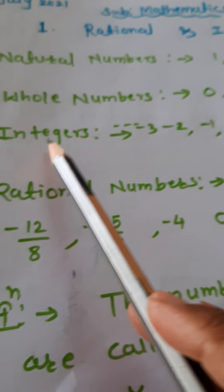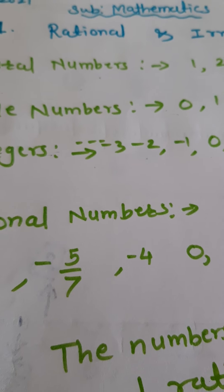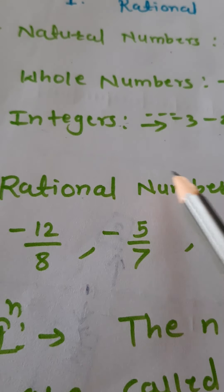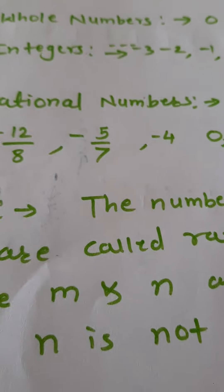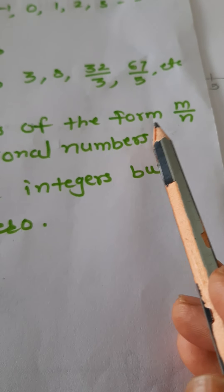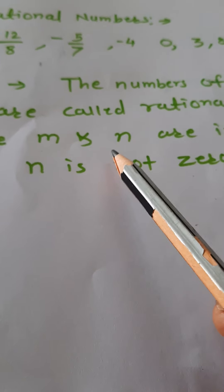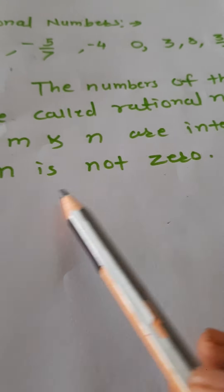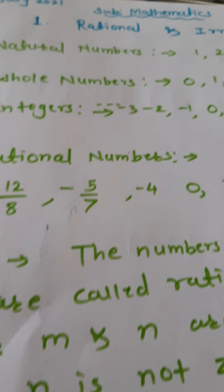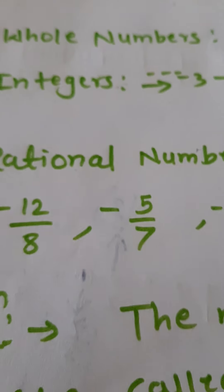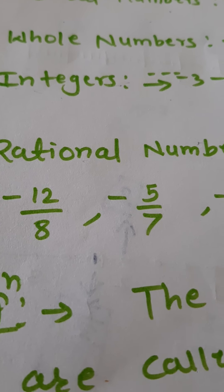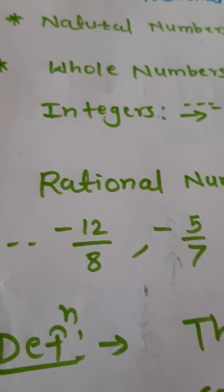Now, in this lesson, you are going to see rational and irrational numbers. What is meant by rational numbers? Let's see the definition. The numbers of the form m upon n are called rational numbers. Here, m and n are integers but n is not 0. The denominator should never be 0.